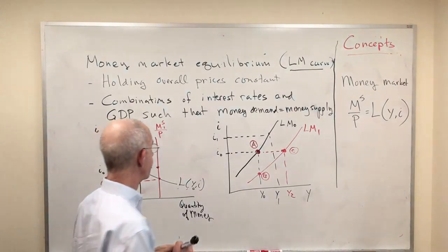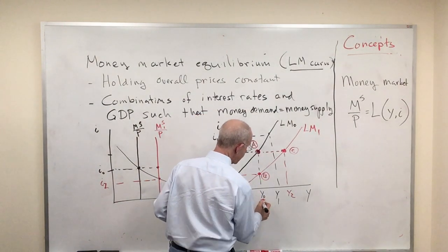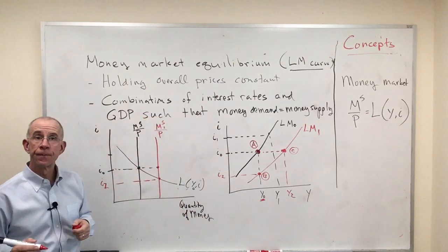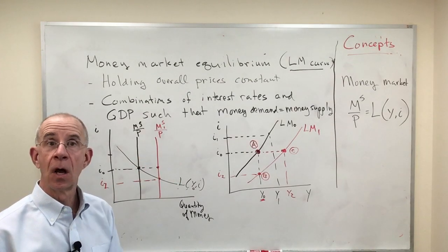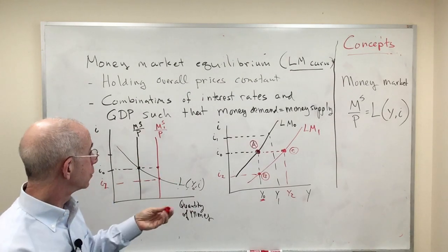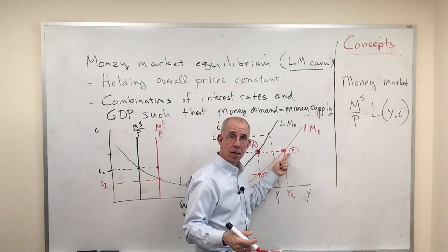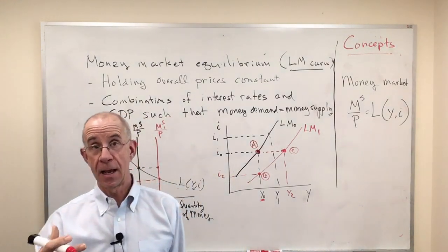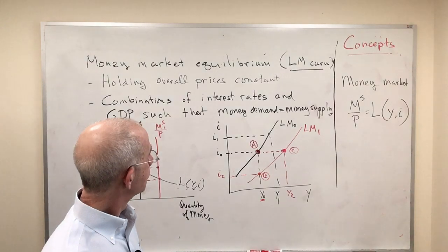So essentially, if output doesn't change, interest rates would have to fall by this same amount, just drawn on a different graph. Alternatively, you could keep the interest rates the same. If your income went up, it would shift the demand curve for money out and you'd get an equilibrium that way.